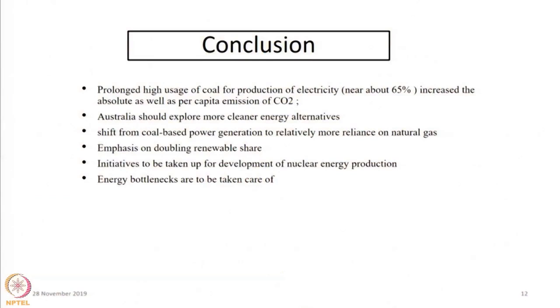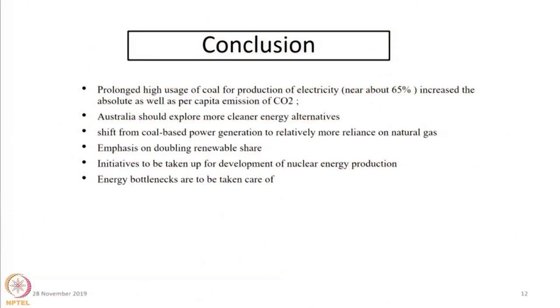In conclusion, Australia has a lot of CO2 emissions — per capita CO2 emission is very high. They have abundant uranium resources and sunlight, so they can make use of uranium and solar energy as renewable sources, which will reduce CO2 emissions. Diversification of fuel is very important for Australia to improve energy security. The energy bottlenecks should be addressed so that Australia can take further steps toward renewable energy sources.